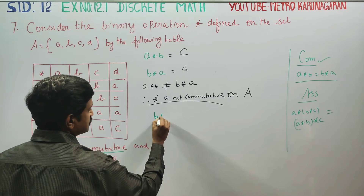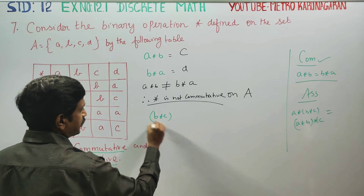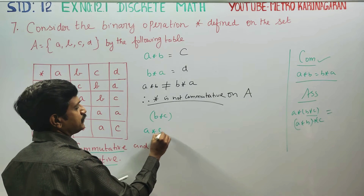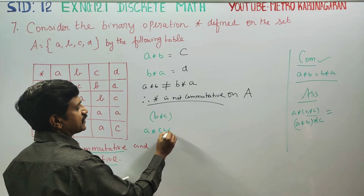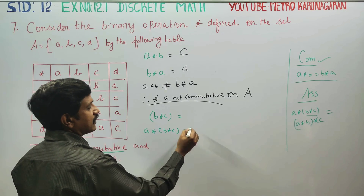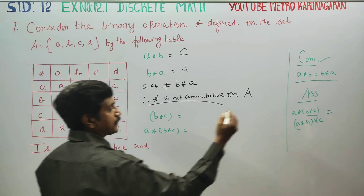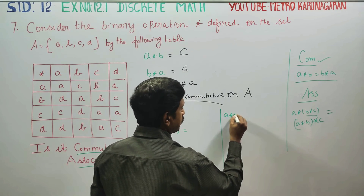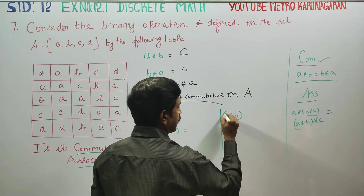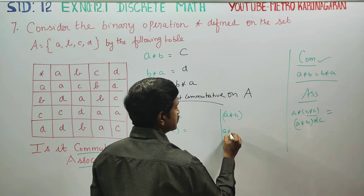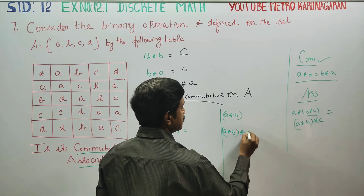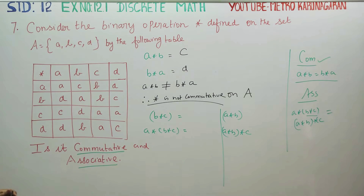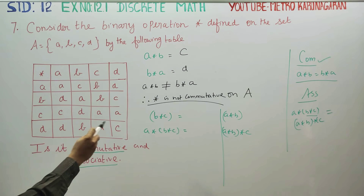For the associative property, first we compute b★c. Then we compute a★(b★c) using the bracket. Next, we also compute (a★b) first, and then (a★b)★c, to compare both sides.